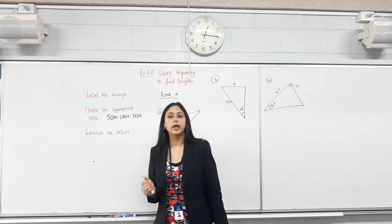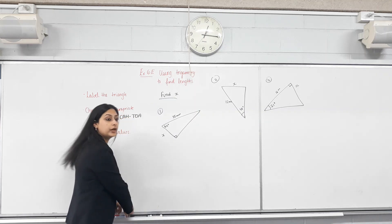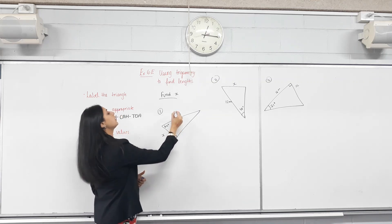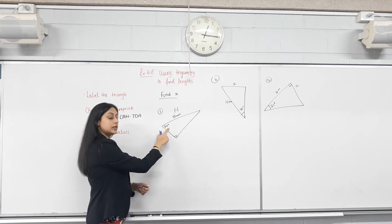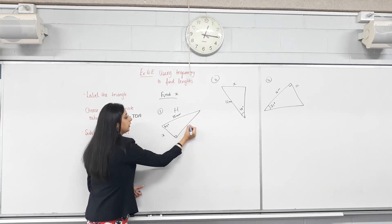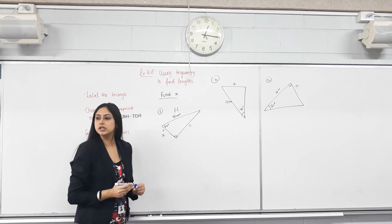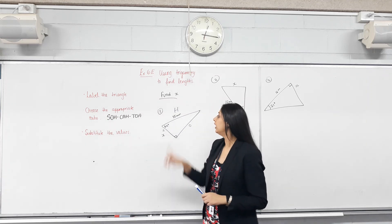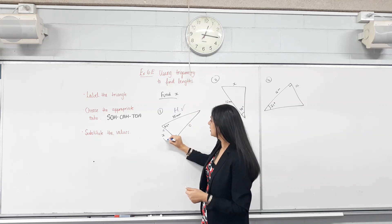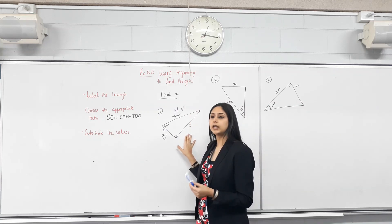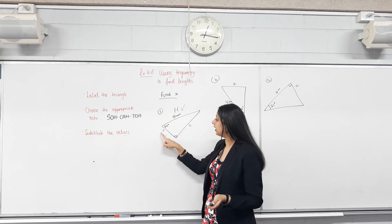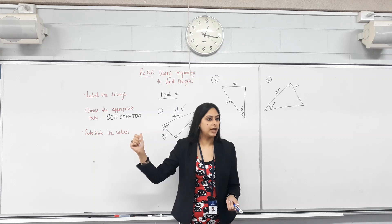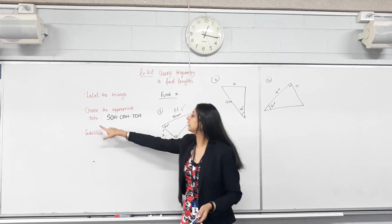First question — label the triangle. The first side we label is the hypotenuse, which is opposite the 90-degree angle, so we label it H. The angle given to us is 64 degrees. The side opposite to the angle is O, and the side touching the angle is the adjacent, A. Now we choose an appropriate ratio. The adjacent side is given to us and the adjacent is unknown — we haven't been given or asked to find the opposite. So which two sides are we working with? A and H.